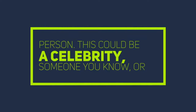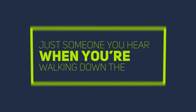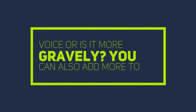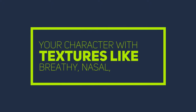Imitation: characterizing your voice so that it sounds like a specific type of person. This could be a celebrity, someone you know, or just someone you hear when you're walking down the street. Texture: does your character have a smooth, sultry voice, or is it more gravelly? You can also add more to your character with textures like breathy, nasally, guttural, hoarse, etc.